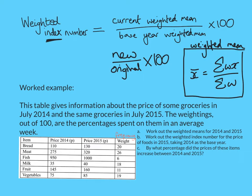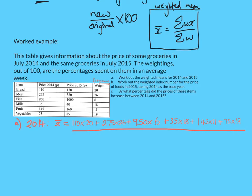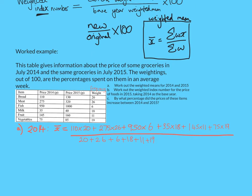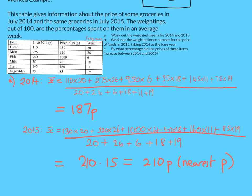Let's find the weighted mean for 2014. I would do 20 times 110 plus 26 times 275, etc. Note that when I divide, I'm not dividing by 6 because there are 6 different numbers — I'm dividing by the sum of all the weights, the total frequency. Putting those numbers into my calculator gives 187 pence. So the weighted mean for 2014 is 187 pence. Now do the same for 2015 — try pausing the video. The answer is 210 pence to the nearest pence.